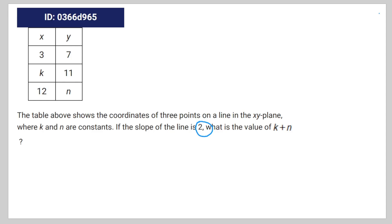So we have this algebra question. The table above shows the coordinates of three points on a line in the xy plane, where k and n are constants. The slope of the line is 2. What is the value of k plus n?